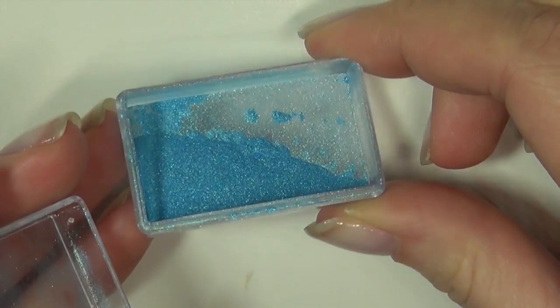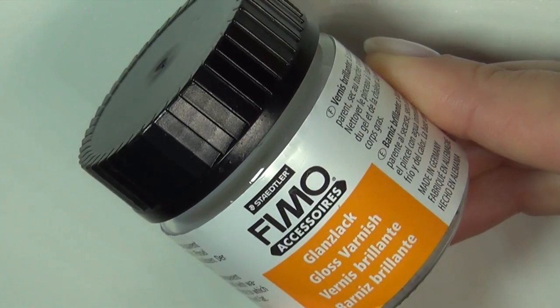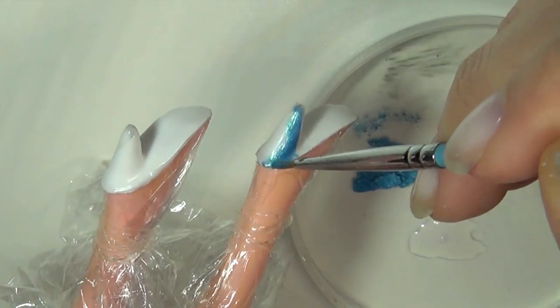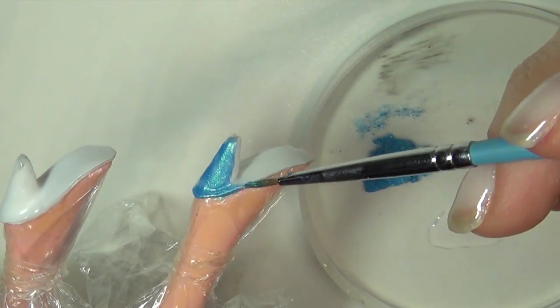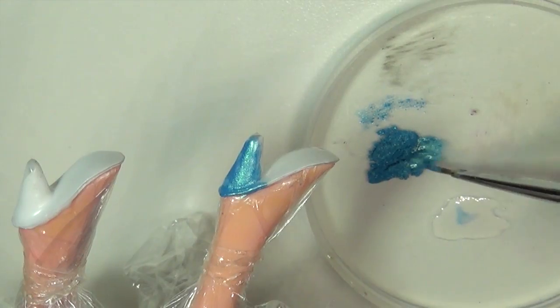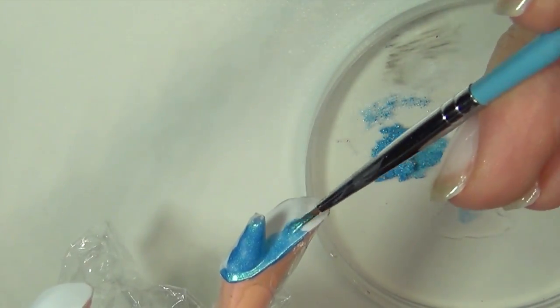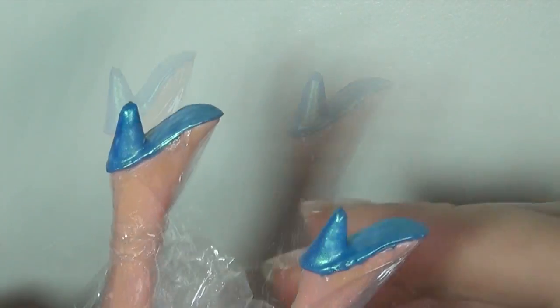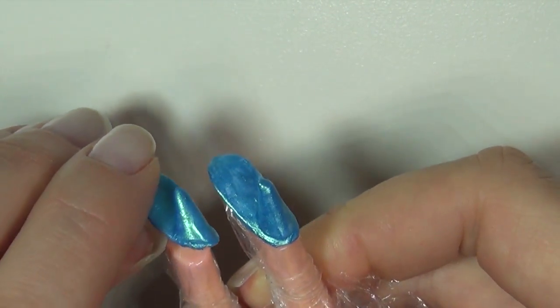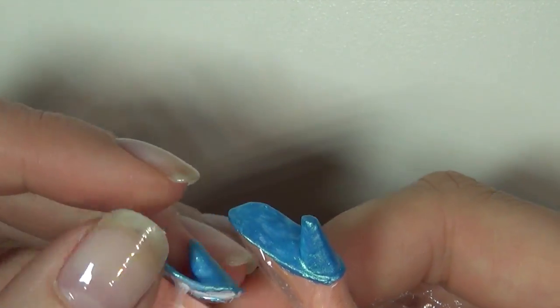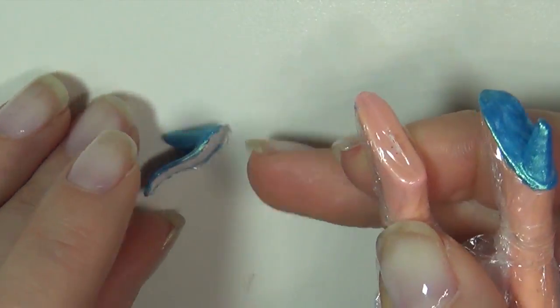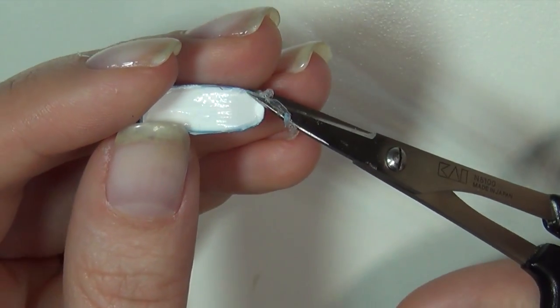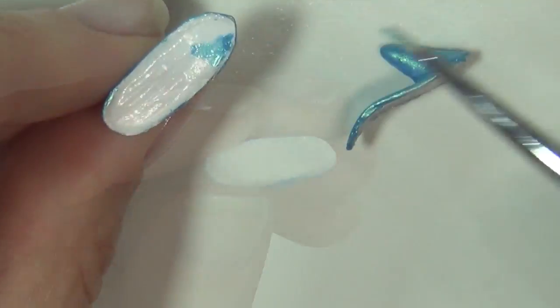To add some color, I'm going to use this blue shimmery mica powder. You can also use eyeshadow and I'm going to mix it with this shiny glaze. When it's all dry, gently remove the shoes and cut away any excess glue that might have gotten up on the foot. Then add color to the inside as well.